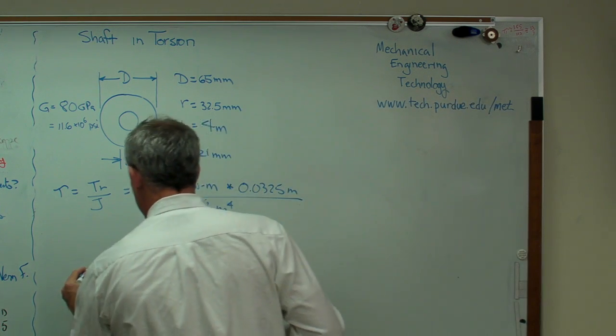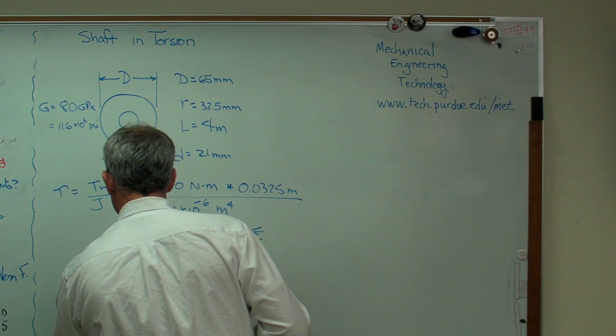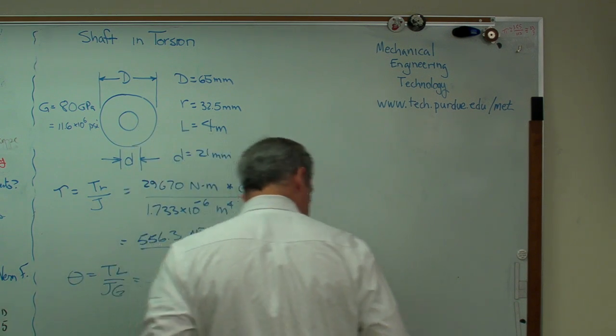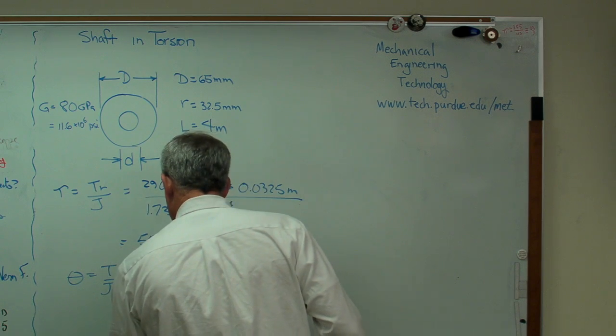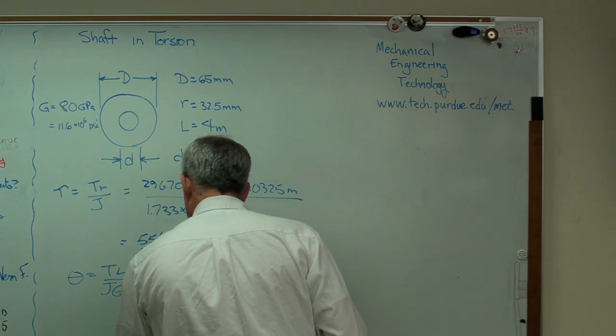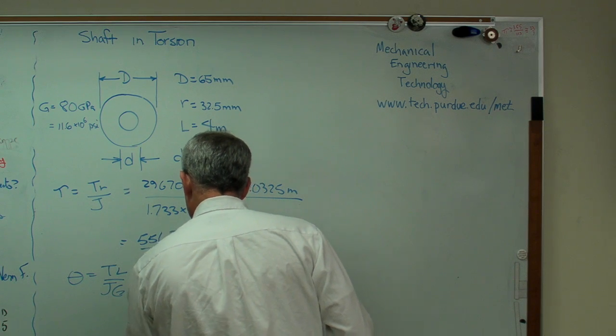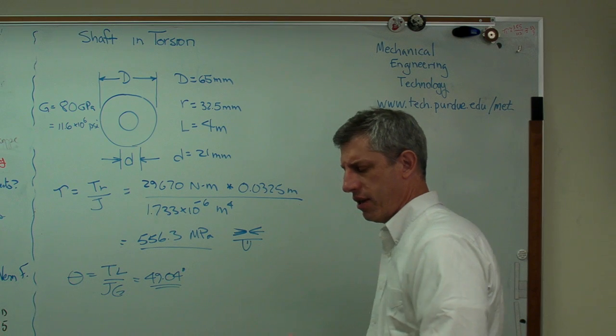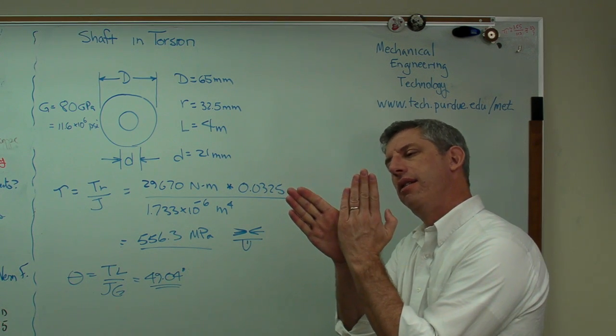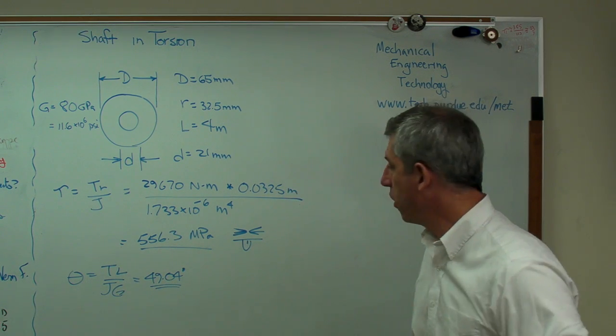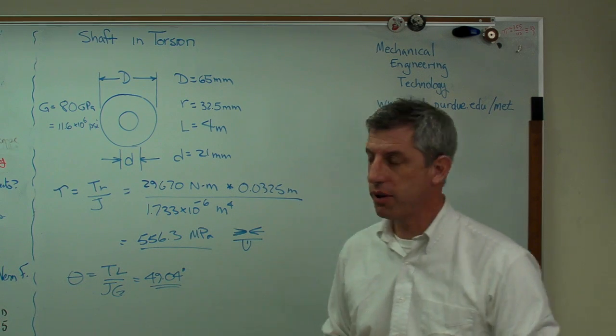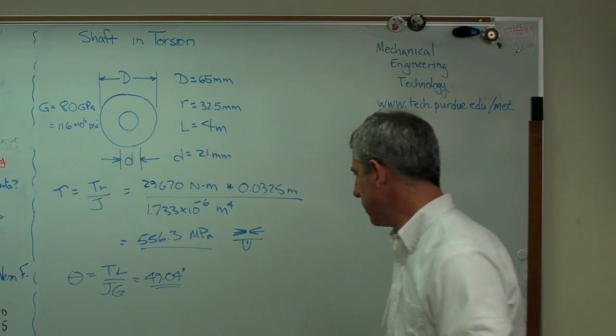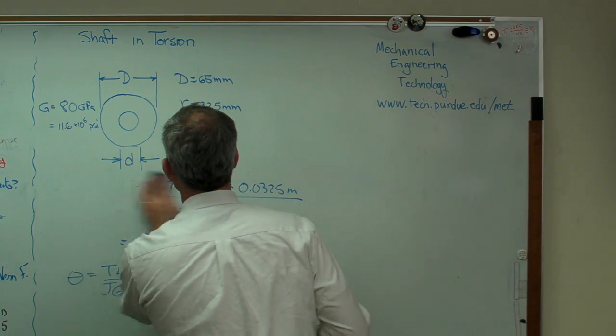Also, while I've got it here, let's figure out theta, which is T L over J G. If you plug those numbers in, you get 49.04 degrees. Well, 49 degrees is like that. That's a lot. For a four meter shaft, that's a lot. So that number and that number both should tell you this isn't good. This isn't going to work. So let's make some changes.